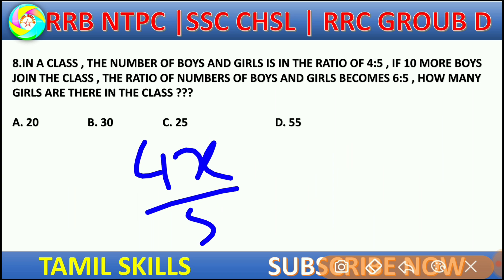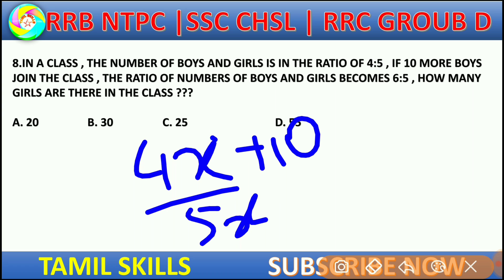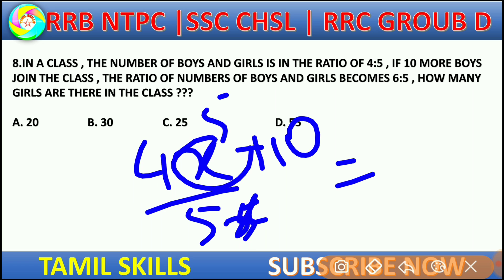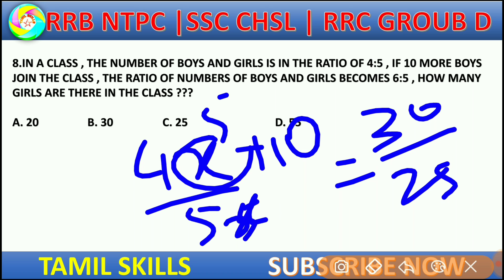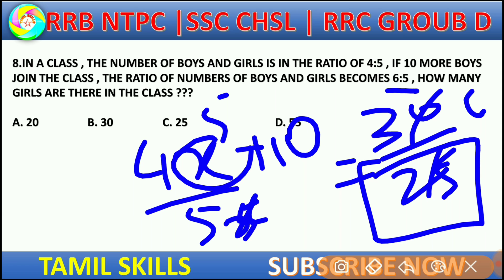With x equals 5, the original ratio was 4x to 5x. Now 5x equals 25. So the number of girls in the class is 25.